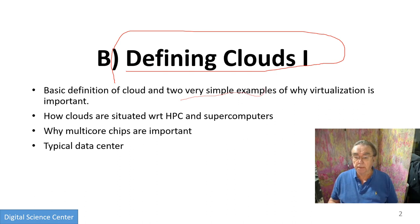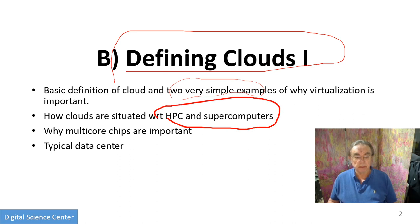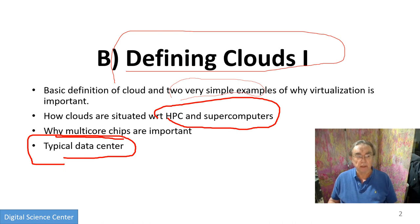We have a couple of simple examples. Then we make some remarks — we'll expand later — about how clouds are positioned with respect to HPC and supercomputers. We note the importance of multi-core: the fact that there are lots of cores means we need technologies that use them. And we describe some aspects of a typical data center, which we'll get into more detail later on.